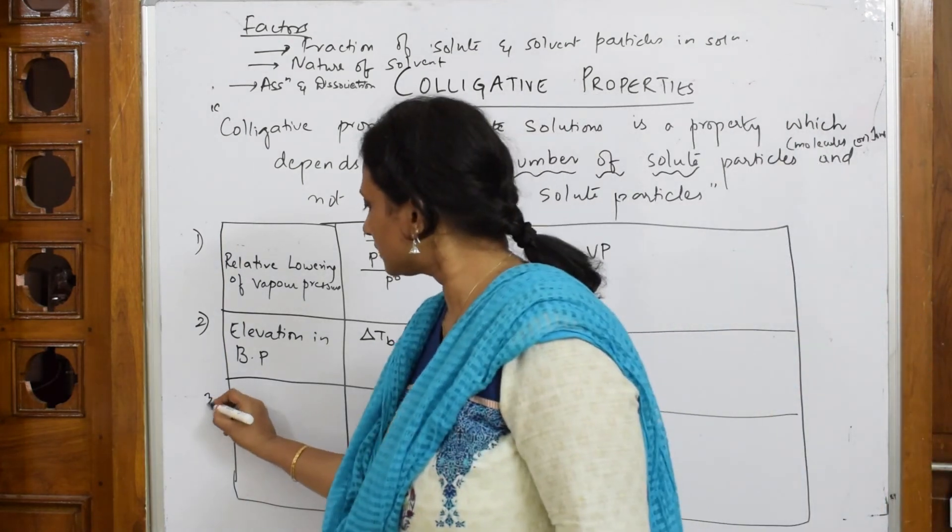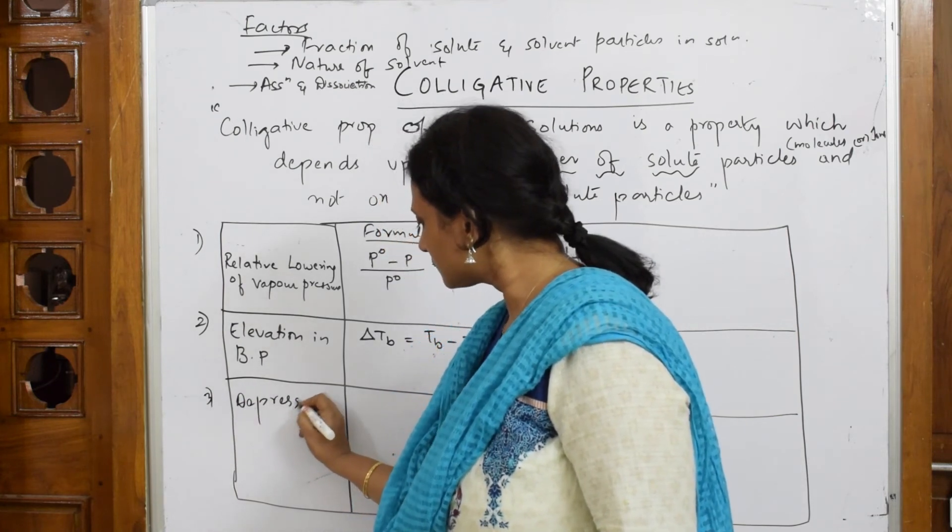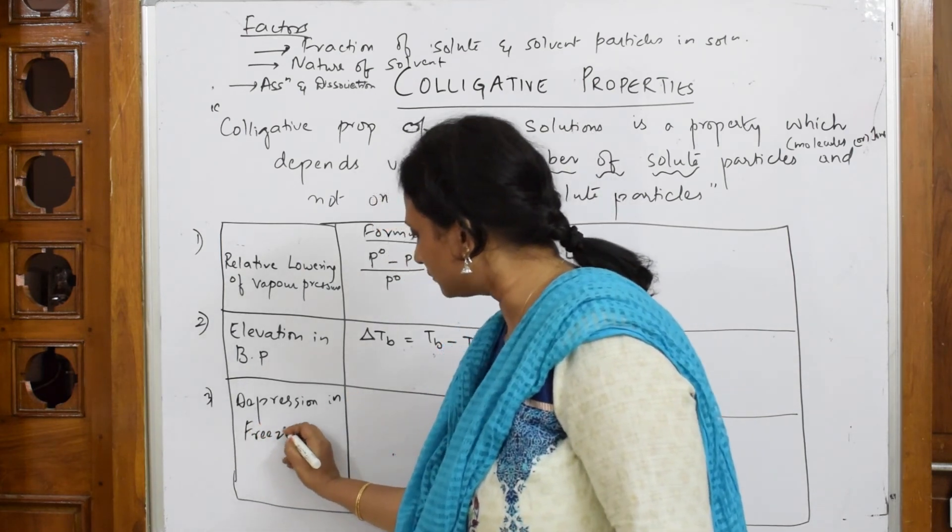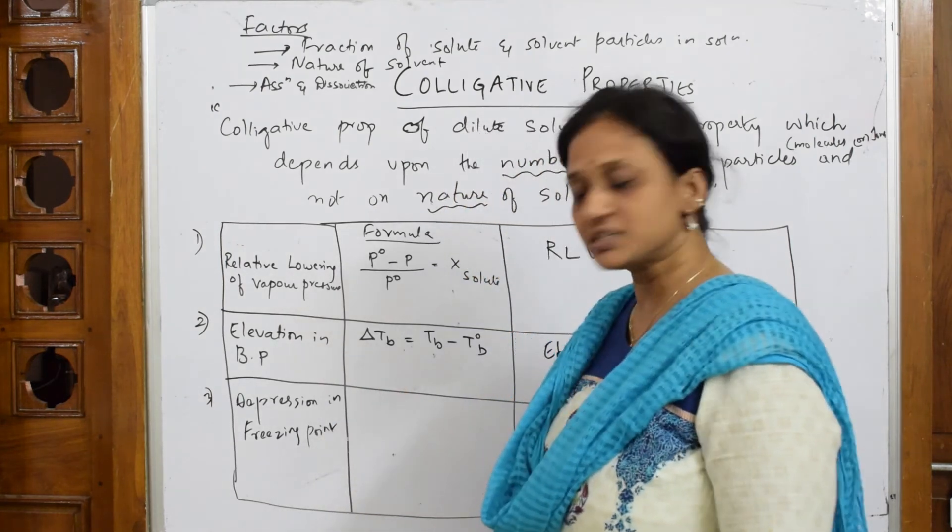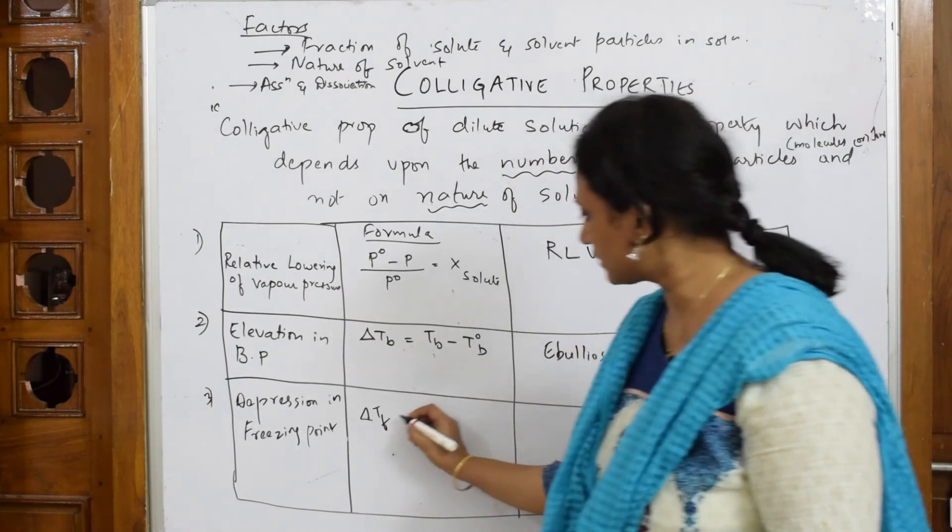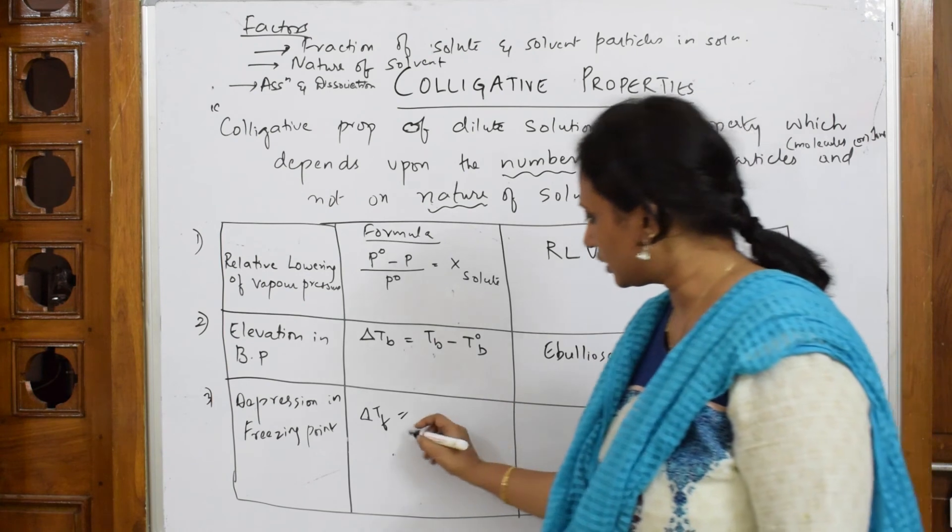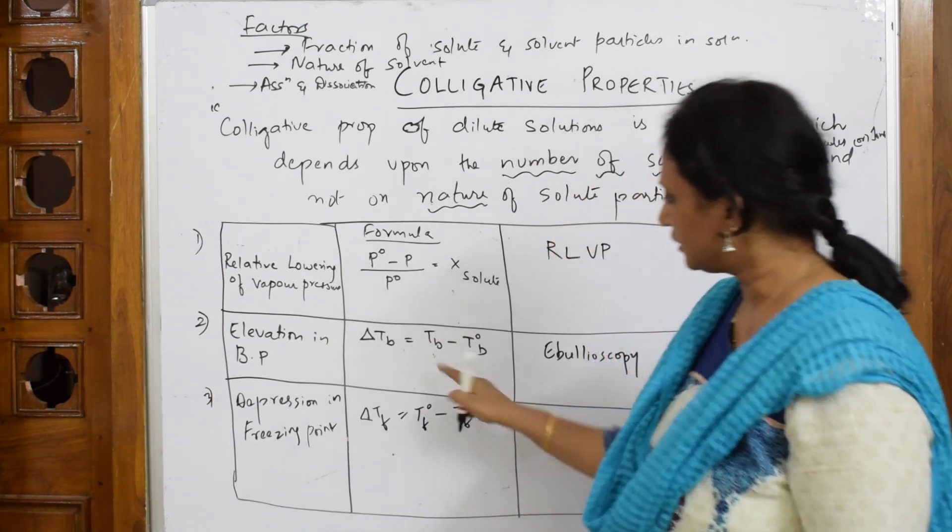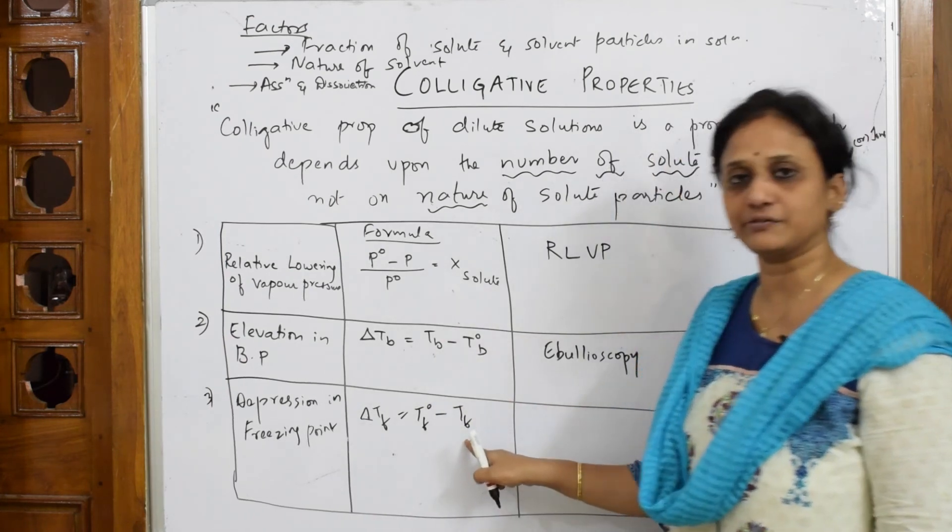The third one is depression in freezing point. Depression in freezing point is denoted by delta Tf, which is equal to—now elevation is the difference between the higher minus the lower—depression in freezing point is T0f minus Tf. Tb minus T0b; this is T0f minus Tf.